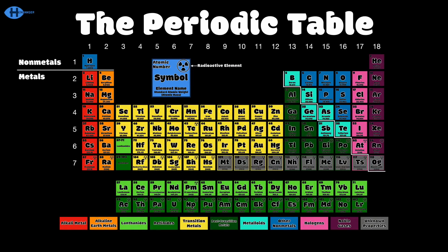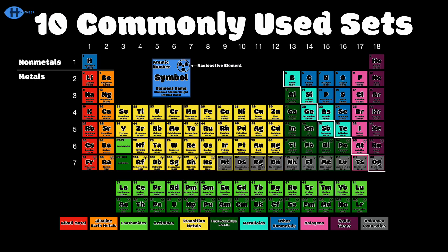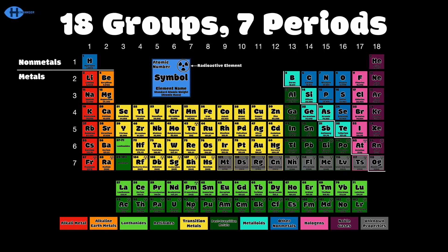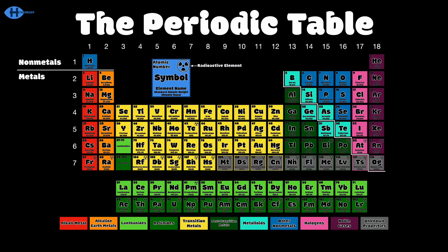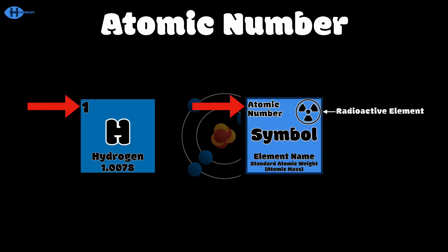The periodic table has 118 elements, usually classified into 10 commonly used sets, with 18 groups and 7 periods. Let's talk about how you use the periodic table — you can find info on all the discovered elements. The atomic number is in the top corner: it's the amount of protons that an element's atom's nucleus has.